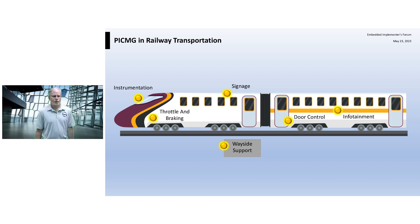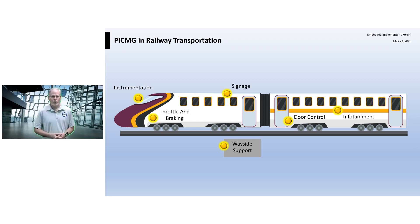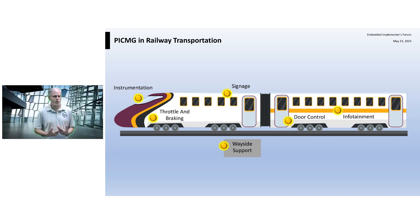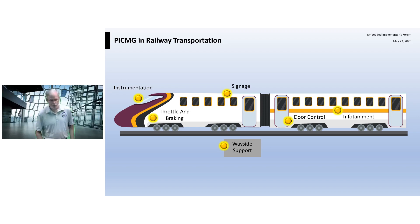And the last thing is wayside support — depending on the railway, there may be boxes alongside the track sitting outside in this harsh environment, gathering telemetry on the train or feeding information to the train. I hope you can see there's a lot of places here that could use embedded computing. Looking at the PICMIG specifications that could play here: CompactPCI Serial, ComExpress, ComHPC, even a modified version of Advanced TCA, potentially on wayside support, or MicroTCA. There's a lot of potential here for PICMIG specifications.